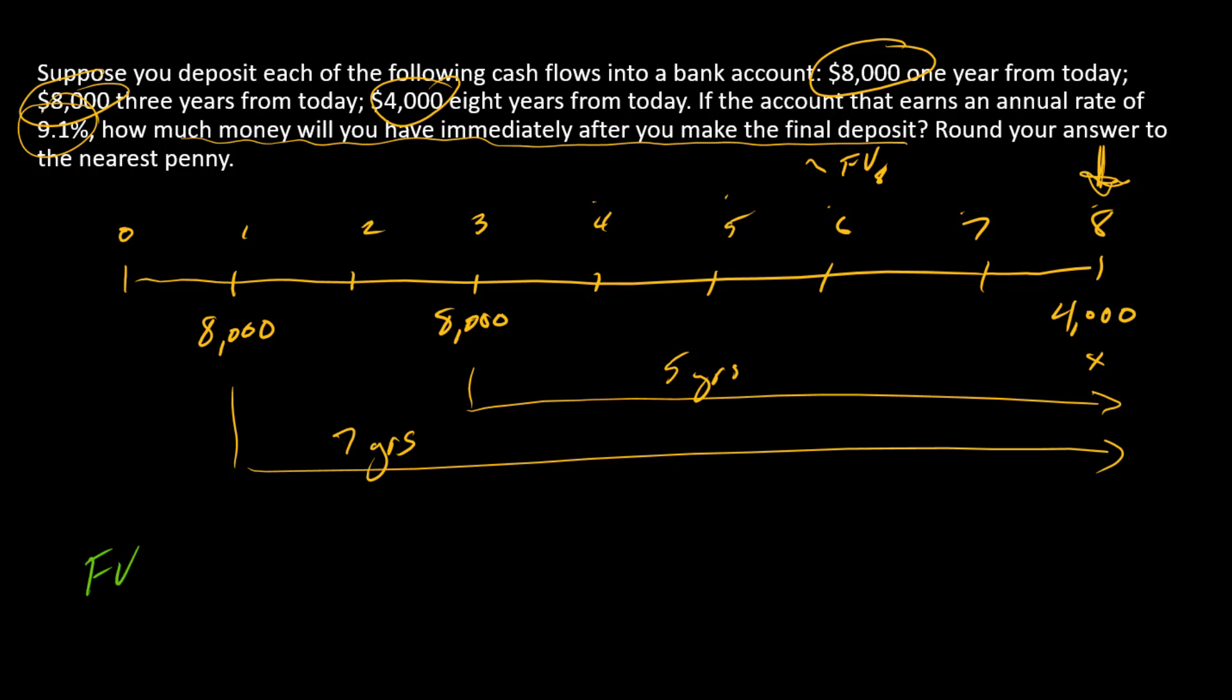Alright, so let's calculate this future value at time eight. I'll start with 8,000 dollars times one plus the interest rate of 9.1 percent, raised to the seventh power, since we're going seven periods ahead.